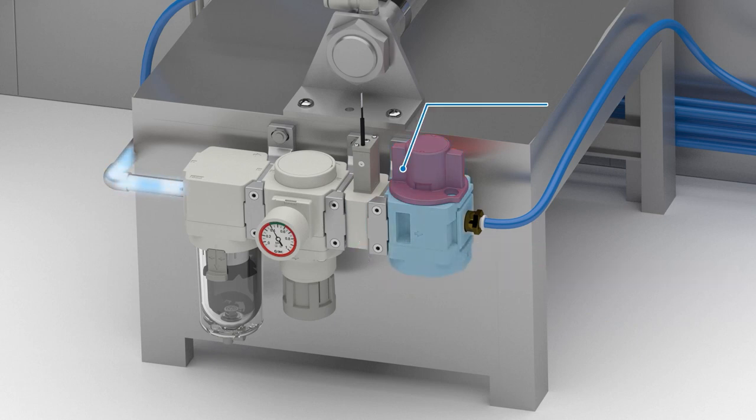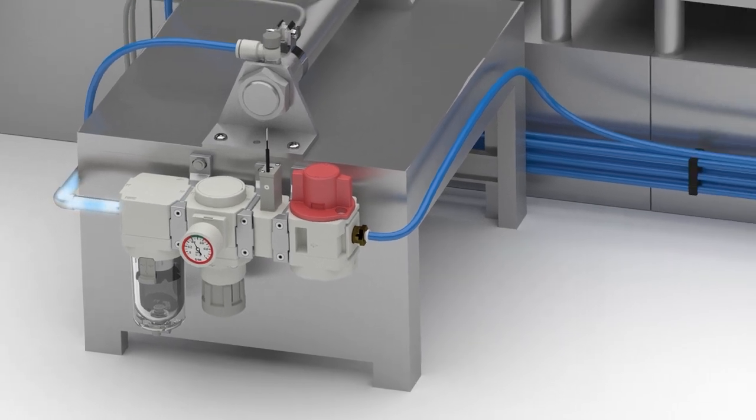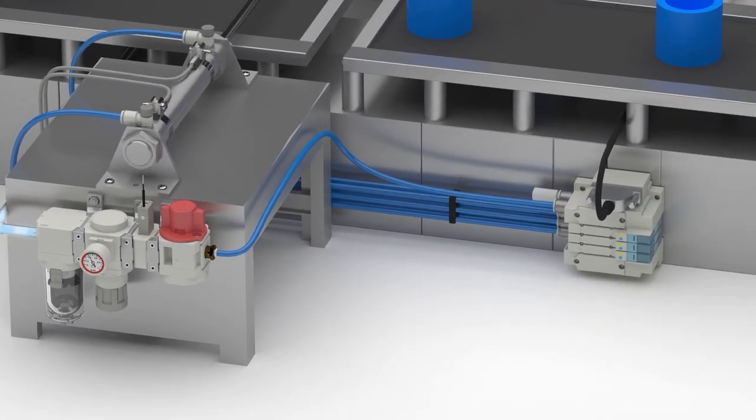And finally, a residual pressure relief 3-port valve is used to manually switch air pressure on and off to the application. It also releases residual pressure in the pneumatic line.